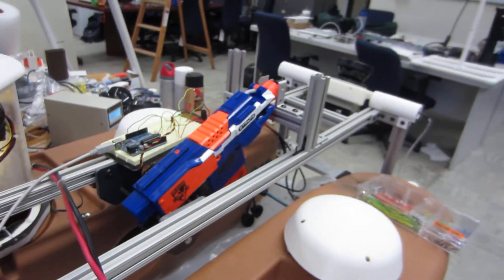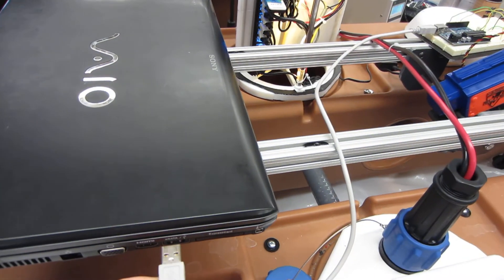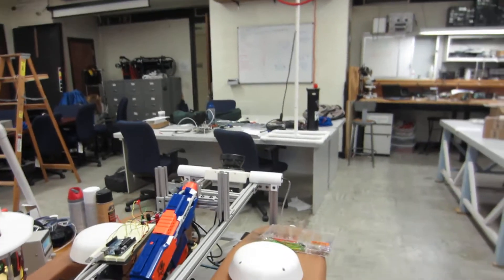To power the servo, we're going to plug this USB cable into the computer, and then once I plug it in, it's going to start firing. So, I'm going to get the camera set up, so you can see the target.